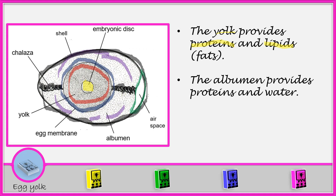So we have the albumen. The albumen provides proteins and water. We have seen the albumen is the whole of this place here — this whole place, the albumen, it provides proteins and water.